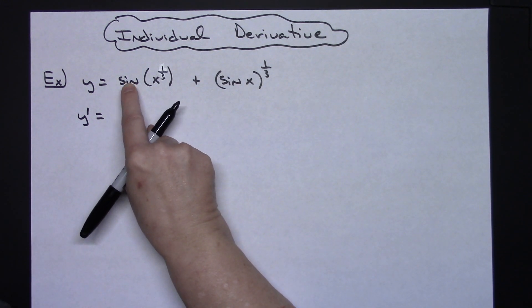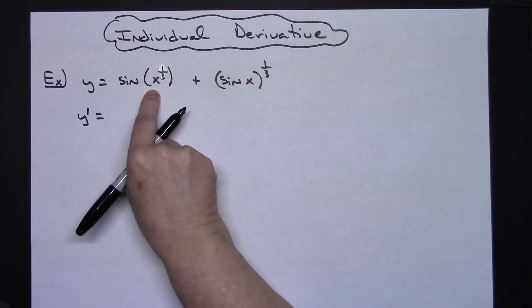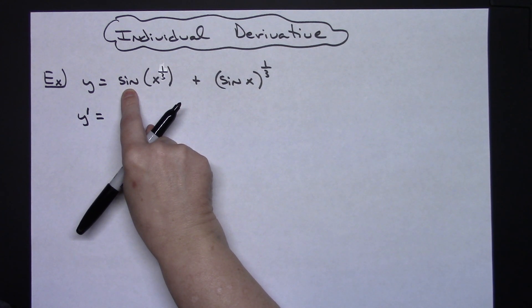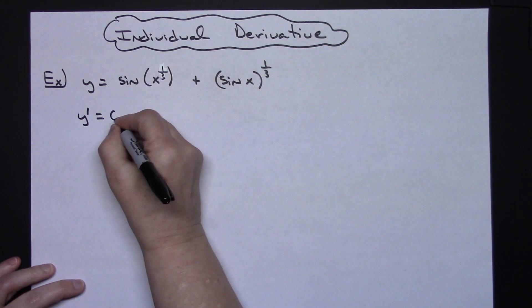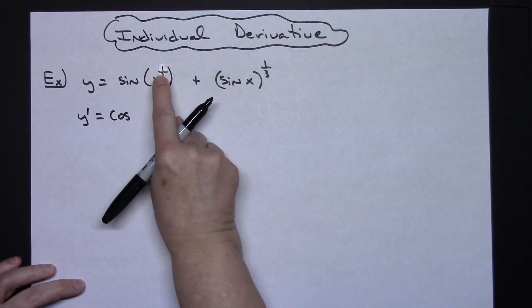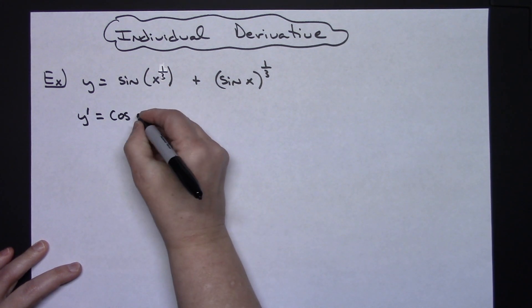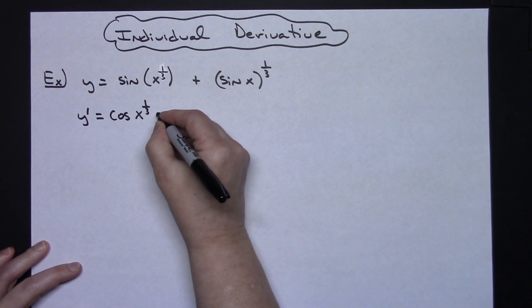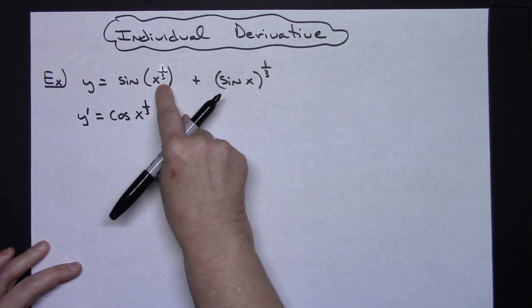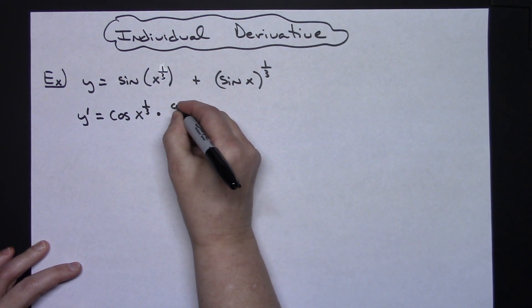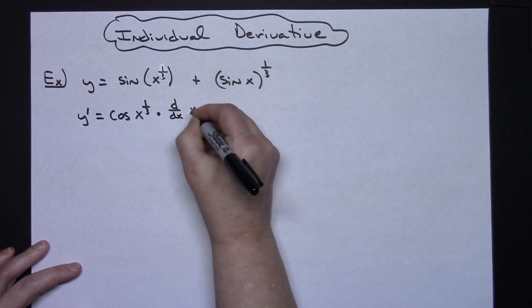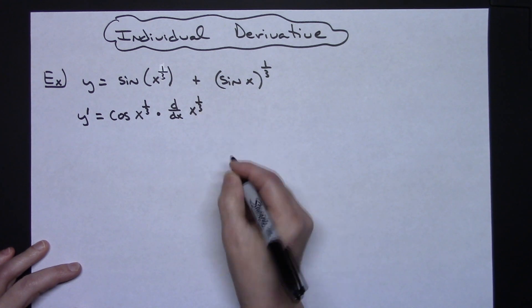For the chain rule, I need to take the derivative of the outside function and leave the inside alone, then multiply by the derivative of the inside. The derivative of sine is cosine, so I leave the inside function x to the 1/3rd alone, then use d/dx notation to indicate we need to calculate the derivative of x to the 1/3rd.